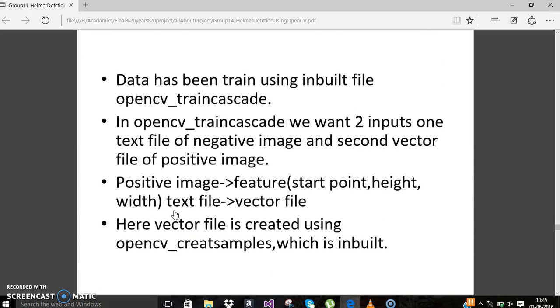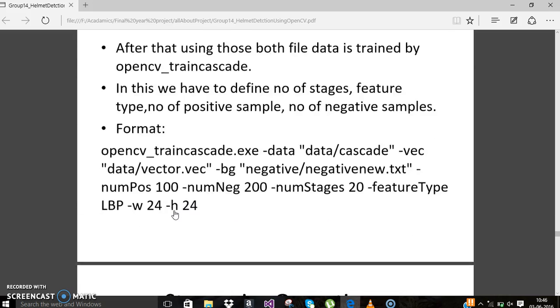We have used two inbuilt utilities: opencv_train_cascade and opencv_create_samples. Using opencv_create_samples, we created one vector file which is the input of opencv_train_cascade. Using that text file of negative images and vector file of positive images, we trained our classifier.